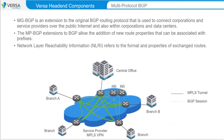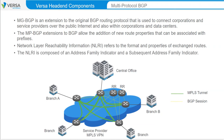NLRI is composed of an address family indicator and a subsequent address family indicator. An example is the MPLS-labeled IPVPN route, which allows a route to be extended with an 8-byte route distinguisher added to the IPv4 prefix. The AFI and SAFI value of MPLS-labeled IPVPN routes is 1/128. If a router supports this AFI/SAFI combination, it supports IPv4 prefixes with a route distinguisher added and other Layer 3 VPN properties associated with the routes.